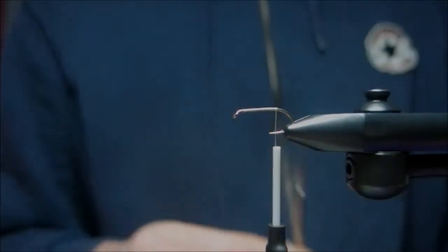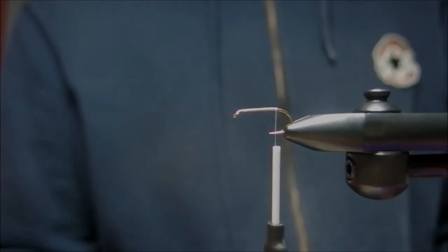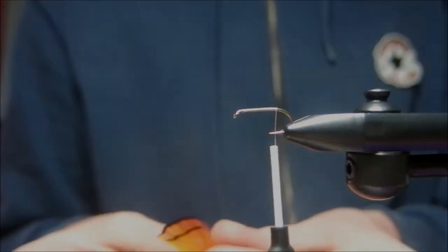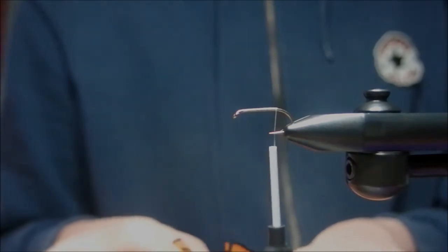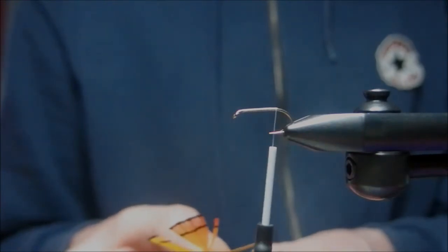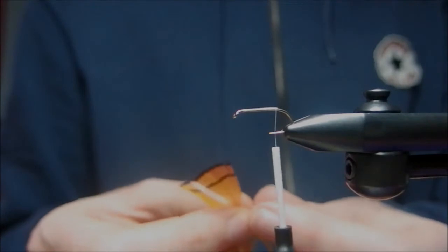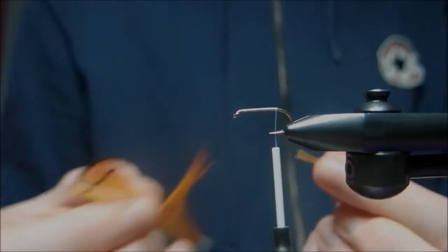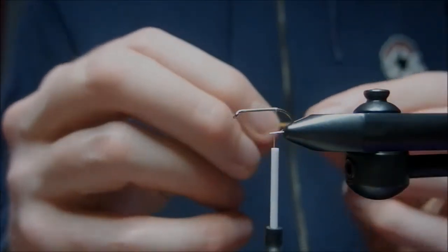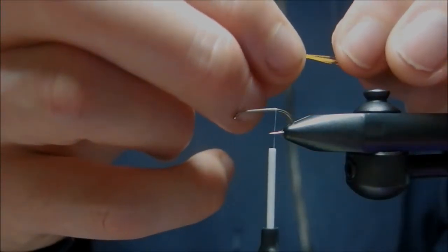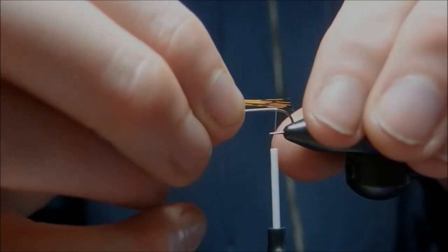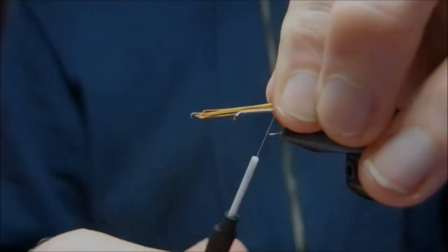And for the tail I've got some Amherst pheasant dyed sunburst. Just take a few. Put it at six fibers, just bring it out 90 degrees and tear off. Just measure for length, put length of the hook, just pinch and whip.